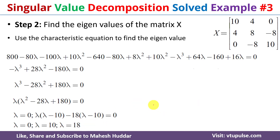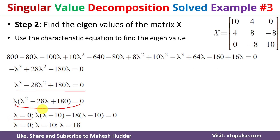When we expand and simplify the equation we get lambda cubed minus 28·lambda squared plus 180·lambda equals zero. Taking lambda as common factor gives lambda times (lambda squared minus 28·lambda plus 180) equals zero. So the first eigenvalue is lambda equals 0. Factoring the quadratic gives lambda equals 10 and lambda equals 18. The three eigenvalues are 0, 10, and 18.